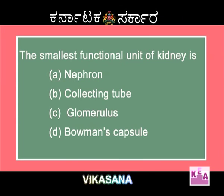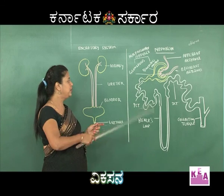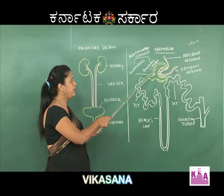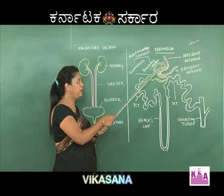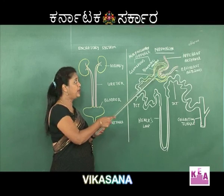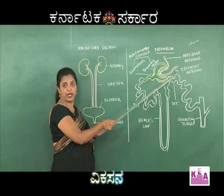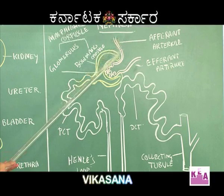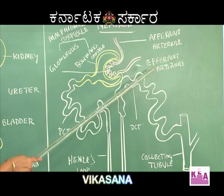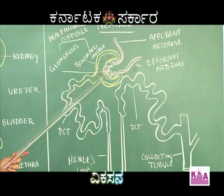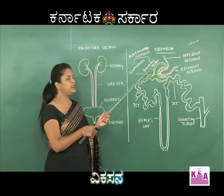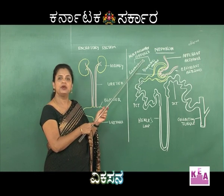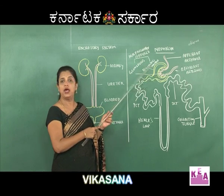The smallest functional unit of the kidney is the nephron. The structure of the nephron begins with the filtering unit called Bowman's capsule. Inside Bowman's capsule are blood vessels — the afferent arteriole brings blood in, and the efferent arteriole takes blood away. The blood vessels within Bowman's capsule are called the glomerulus. Bowman's capsule together with the glomerulus is called the Malpighian corpuscle. Its components are glomerulus and Bowman's capsule.